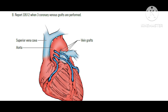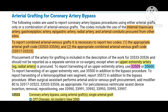Now let us move to arterial grafting for coronary artery bypass grafting procedure. If arteries are used — whether arterial grafting only or a combination of arteries and veins — we have only one set of codes. Arterial grafts can be procured from the internal mammary artery, gastroepiploic artery, epigastric artery, radial artery, and arterial conduits from other sites.